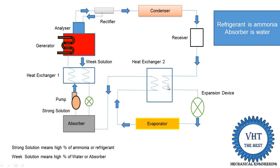We place heat exchanger 2 here between the condenser and evaporator, where heat is exchanged between the liquid refrigerant coming out from the receiver and the vapor refrigerant coming out from the evaporator. Heat exchanger 2 works as a sub-cooler. It reduces the temperature of the liquid refrigerant coming out from the condenser or receiver, which increases the refrigerating effect in the evaporator. The vapor refrigerant leaving the evaporator has its temperature increased, and then it is supplied into the absorber.